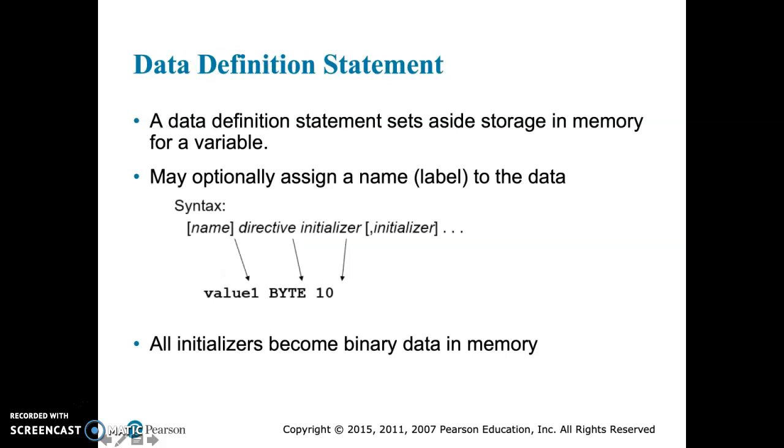Next we have the data definition statement. This essentially is going to be in a segment of our code prior to the execution of the code and it's going to set aside storage in memory for a variable. And we have here the syntax. We don't have to, but we can give it a name. In this case the name is value1, that's essentially the name of our variable. We have our directive or our definition. In this case it's a byte, which is an 8-bit in this case unsigned integer, and then the actual value.